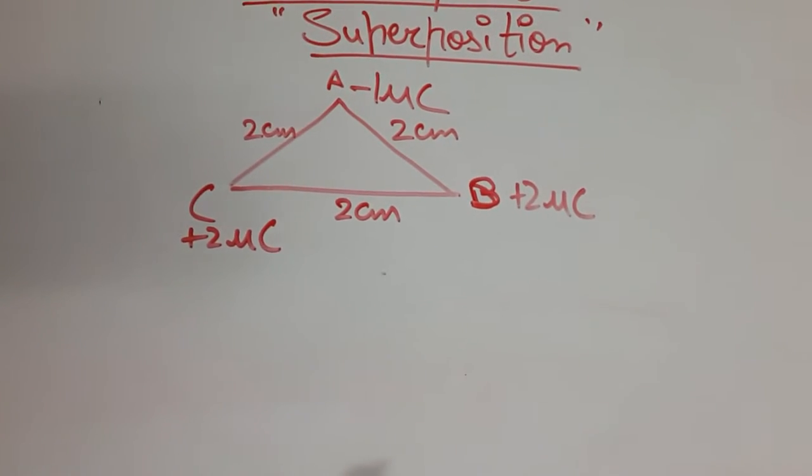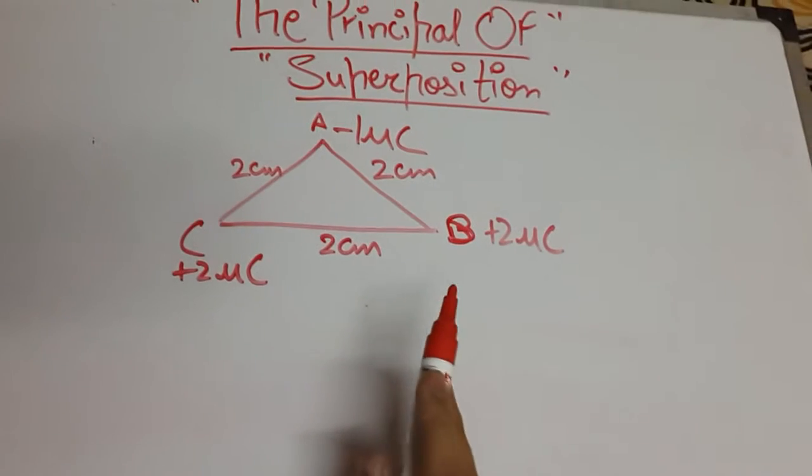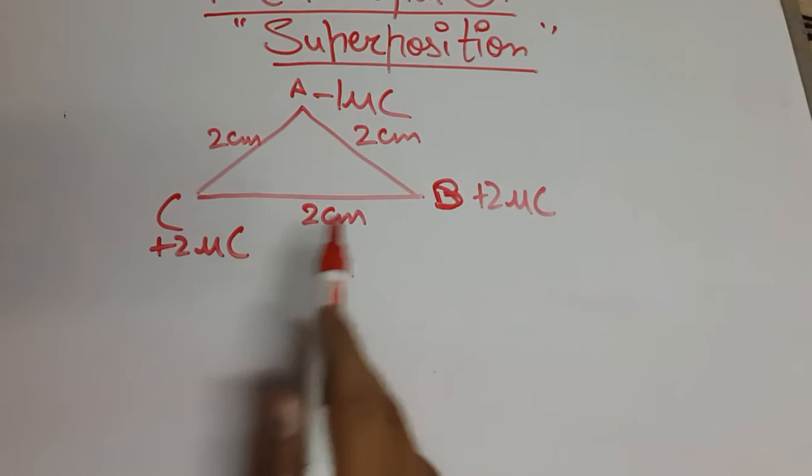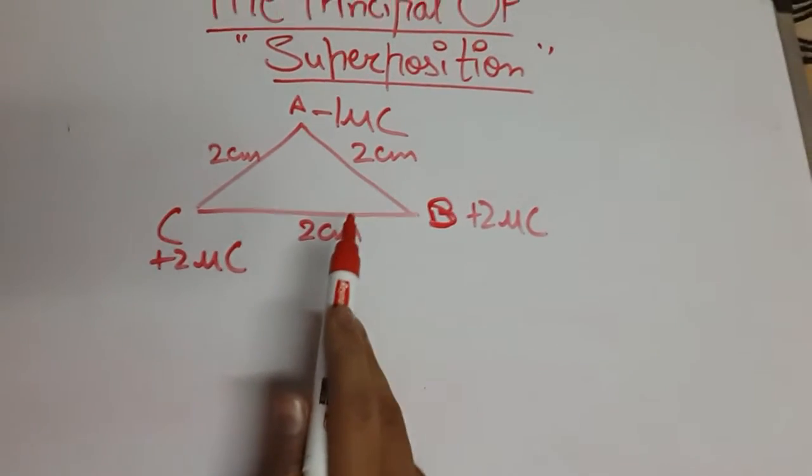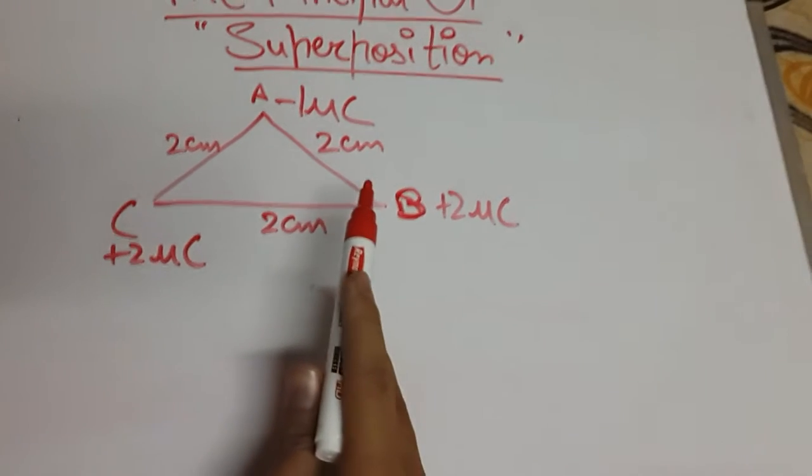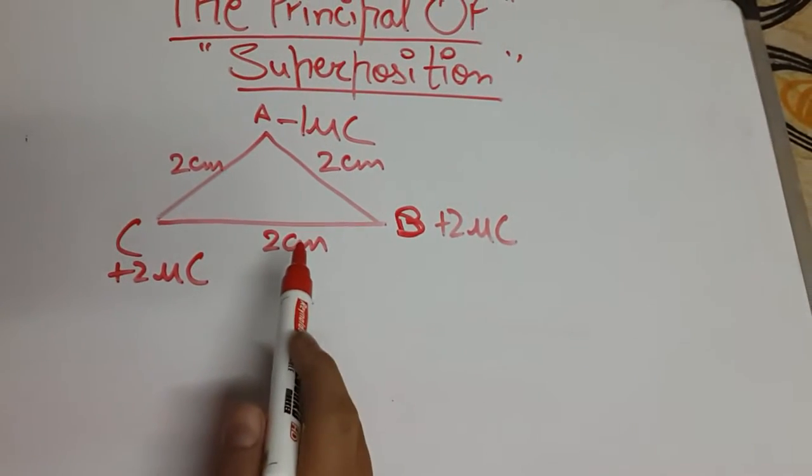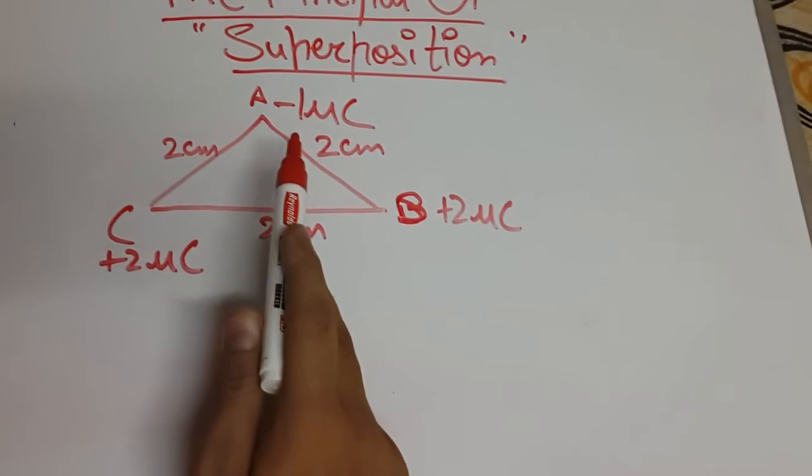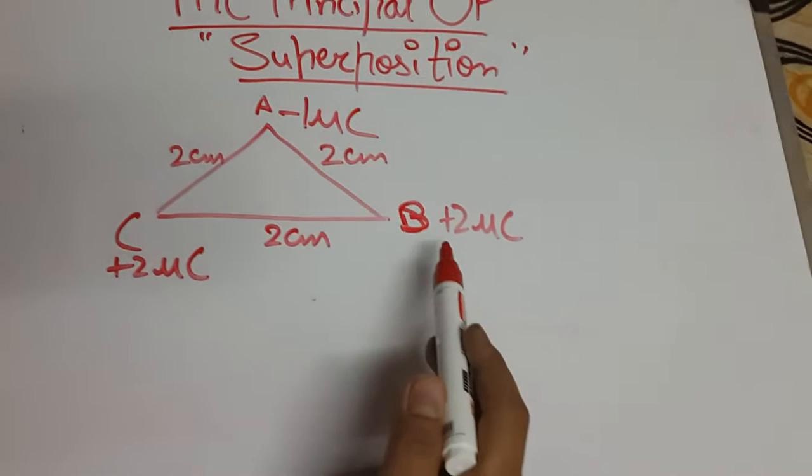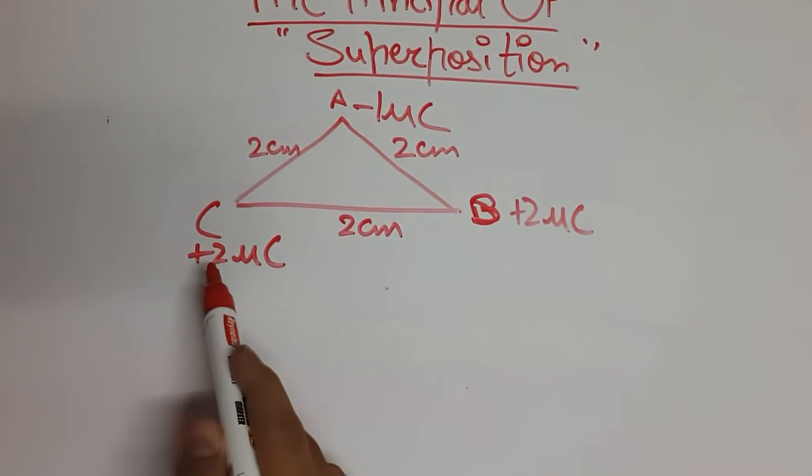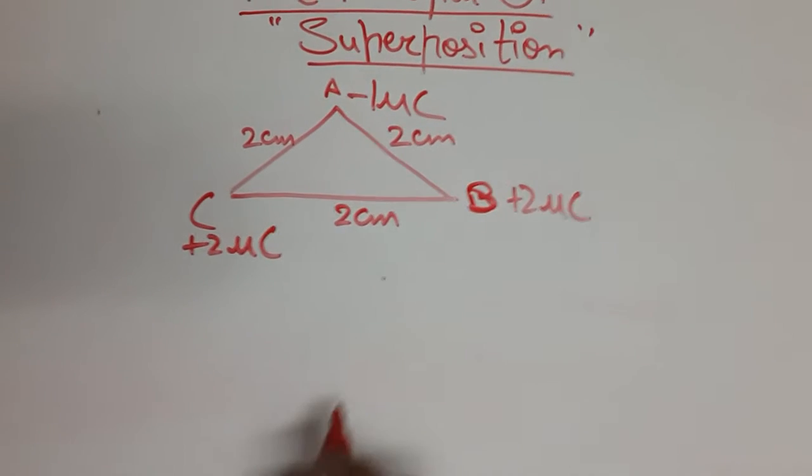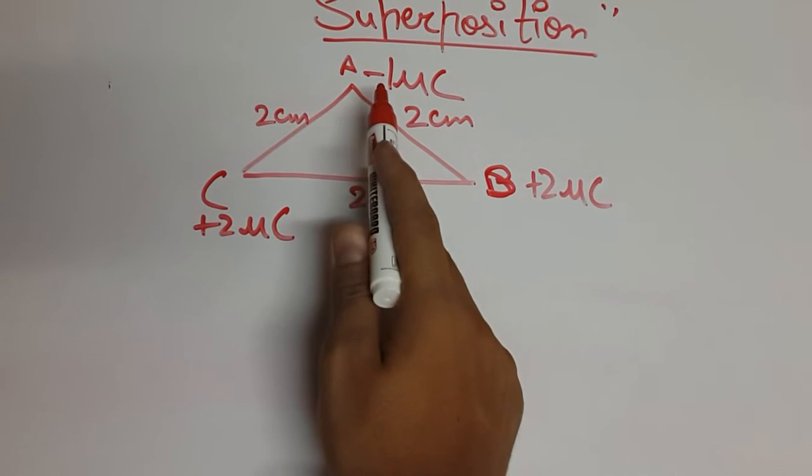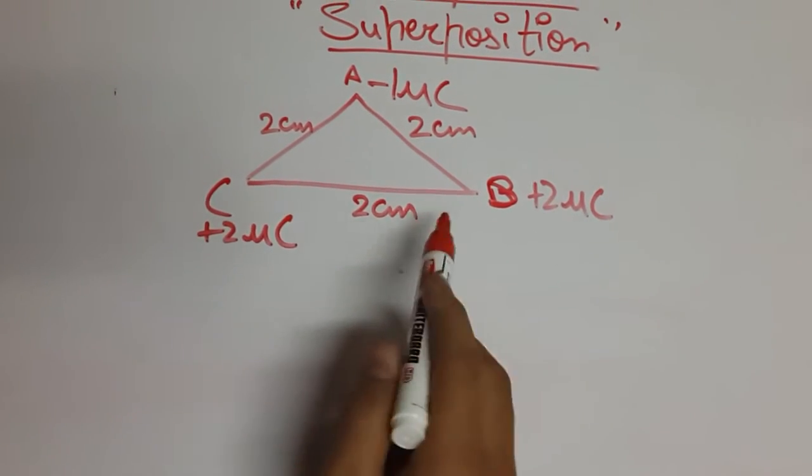So now I will show you an example by which you will get clear about this topic. Suppose three charges in the equilateral form. I know this doesn't look like an equilateral but suppose it is in the form of equilateral triangle. Each charge is separated by each other by 2 cm and the charge A is having a minus 1 micro coulomb charge, B is having plus 2 micro coulomb charge and C is having plus 2 micro coulomb charge.